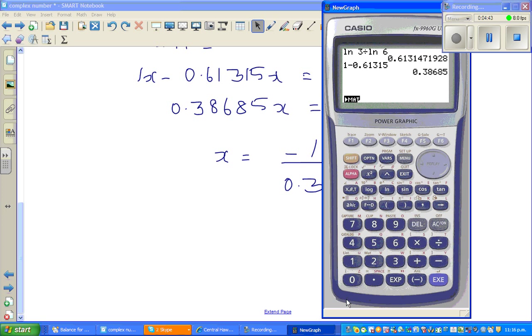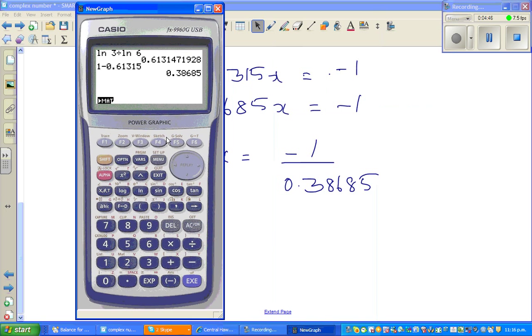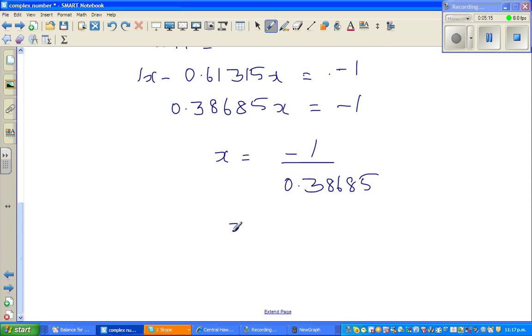Get the calculator: minus 1 divided by 0.38685 equals minus 2.58. In three significant figures, it'll be minus 2.58.